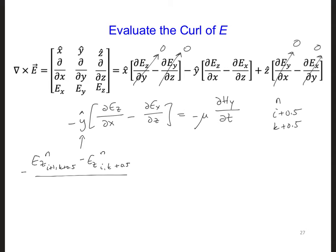Then we have Ex, taking a partial derivative in the z direction: i plus 0.5, k plus 1 minus Ex at n, i plus 0.5, k, divided by delta z.